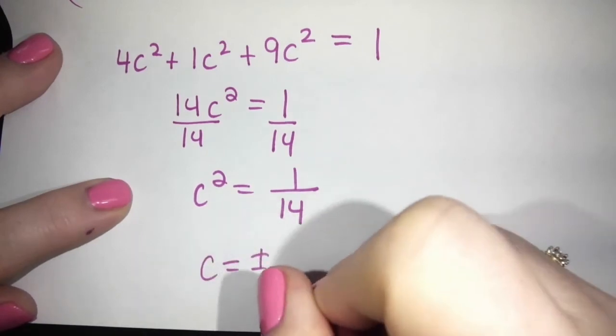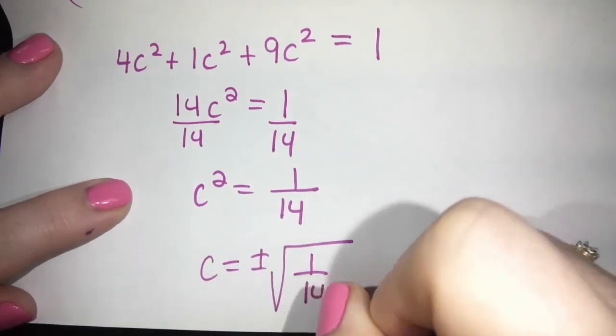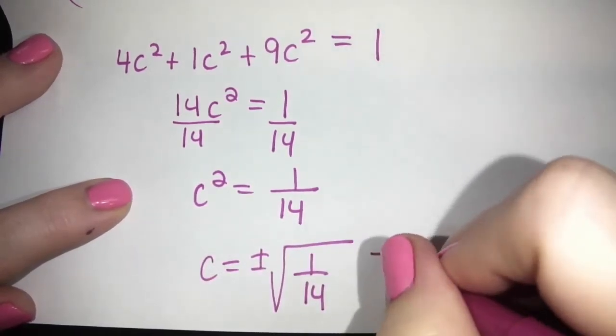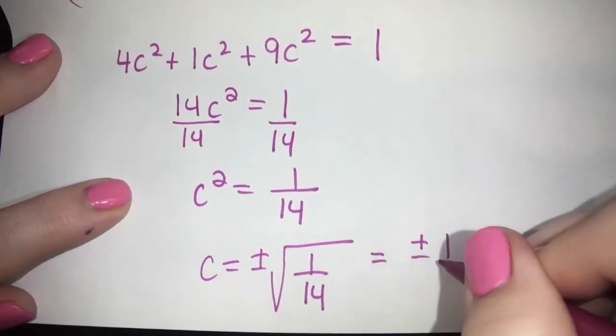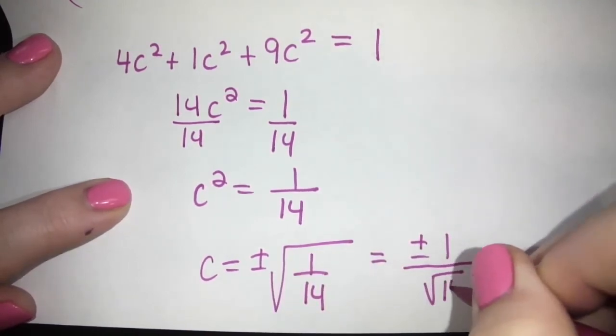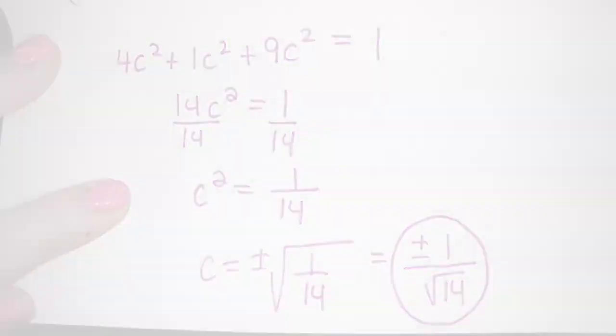But here, C is plus or minus the root of 1 over 14. And because root 1 is 1, they might say plus or minus 1 over root 14. And that would be your answer.